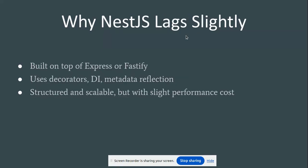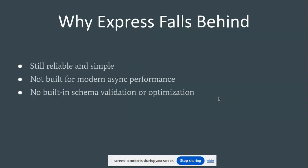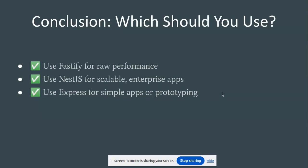Why NestJS lags slightly: it is built on top of Express or Fastify and uses decorators, dependency injection, and metadata reflection. It is structured and scalable, but comes with a slight performance cost. Why Express falls behind: it is still reliable and simple, but not built for modern async performance and lacks built-in schema validation or optimization.